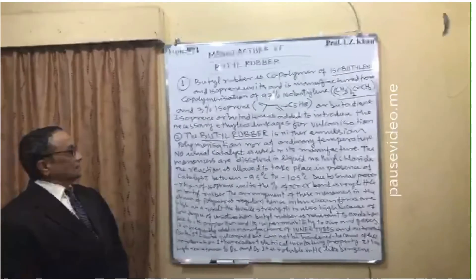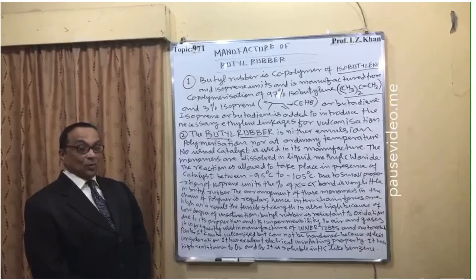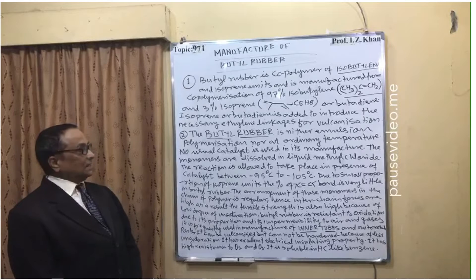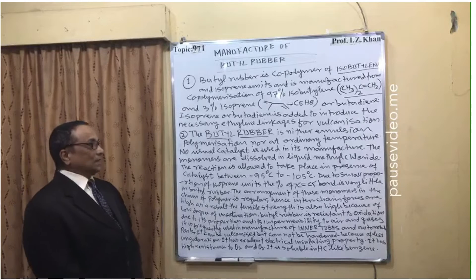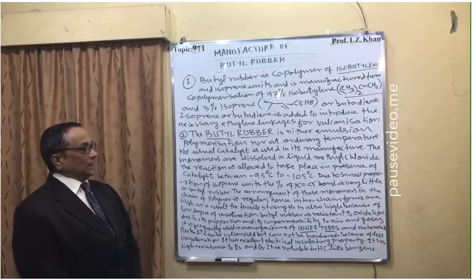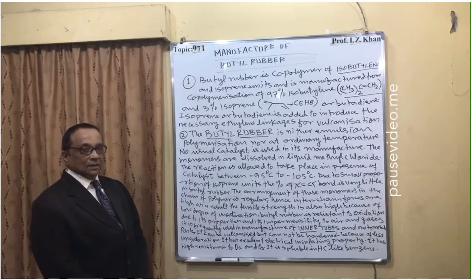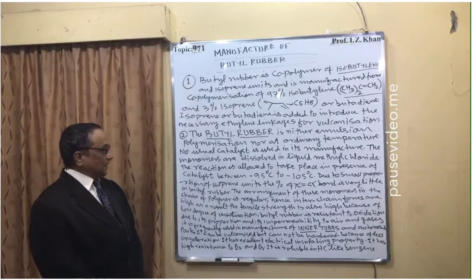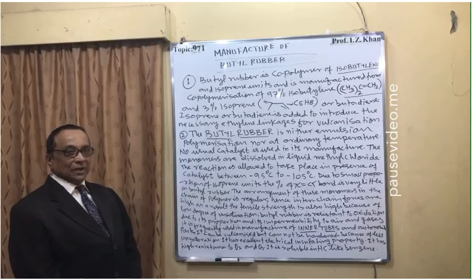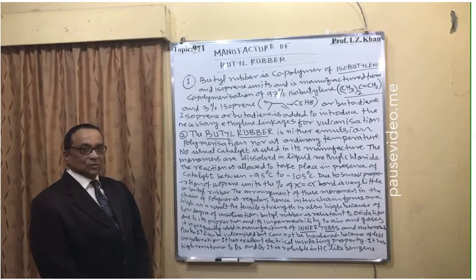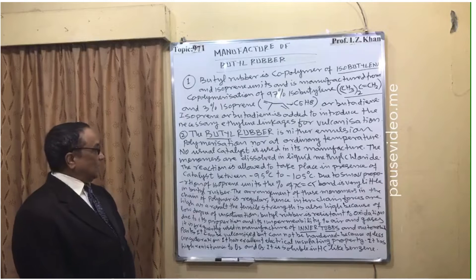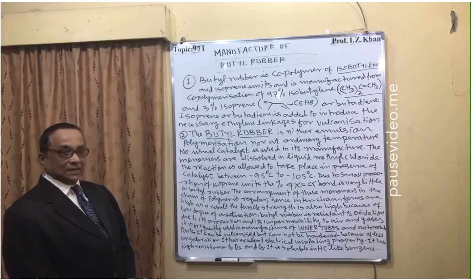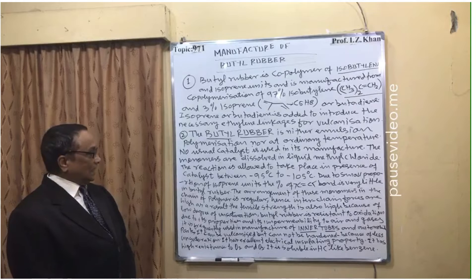Point two: butyl rubber is neither made by emulsion polymerization nor at ordinary temperature. It requires a temperature of minus 95 to minus 105 degrees centigrade. No usual catalyst is used in its manufacture. The monomers are dissolved in methyl chloride and the reaction is allowed to take place in the presence of a catalyst between minus 95 and minus 105 degrees centigrade. Due to the small proportion of isoprene units, the percentage of carbon-carbon double bonds is very little — that is, the unsaturation is very little in butyl rubber.